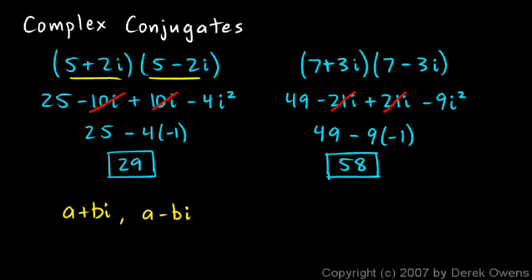these are called complex conjugates. And when we multiply them, we always end up with a real number. Two complex conjugates multiplied together always end up with the imaginary part canceling out, and we end up with a real number.